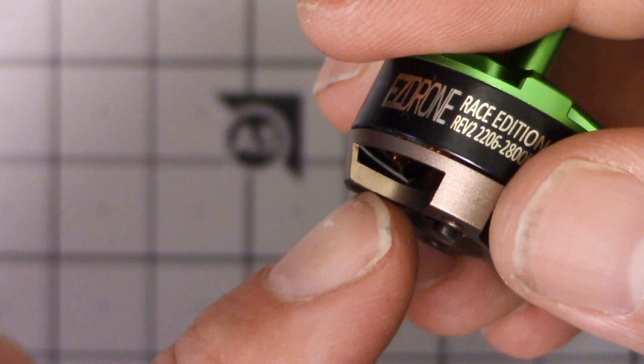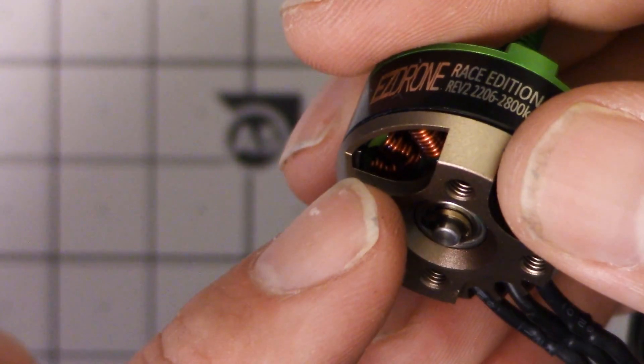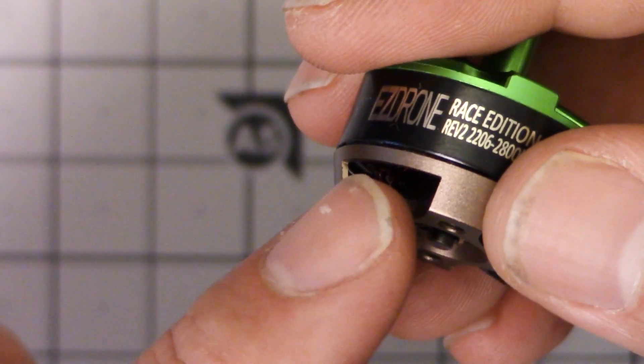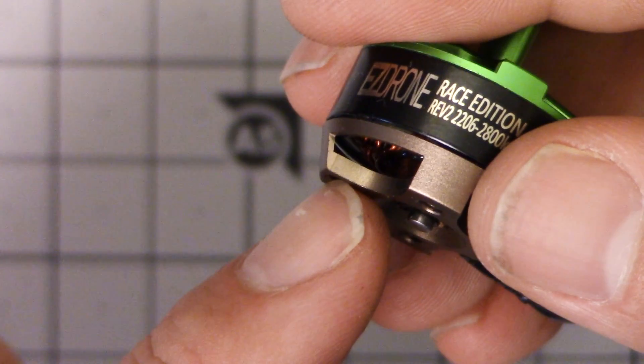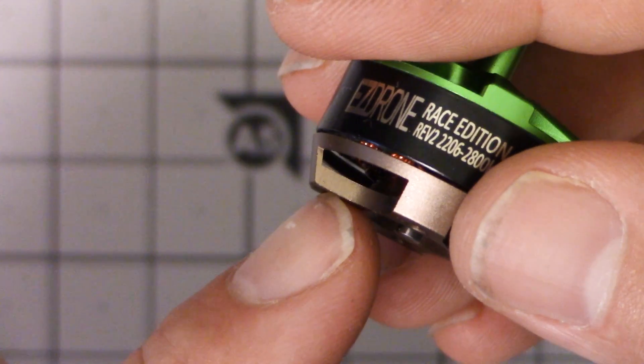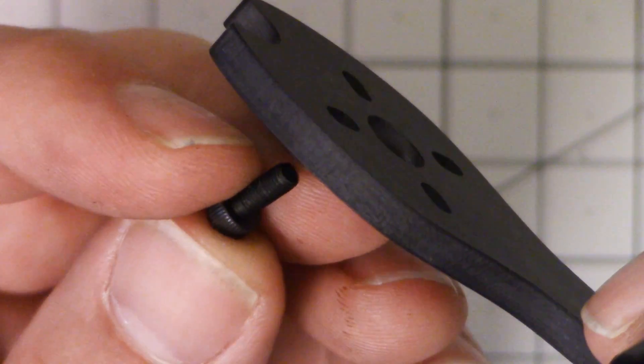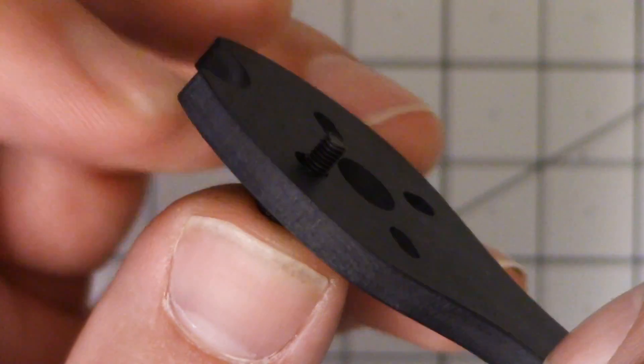That being said it does look like we have a little bit of slack there, looks like we got a little bit of room between the windings and the base. So if you wanted to use slightly longer screws, maybe just a half a millimeter more or a millimeter, you probably could get away with it.